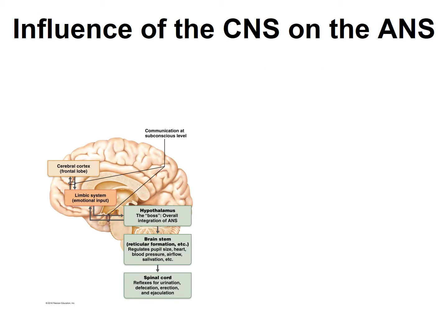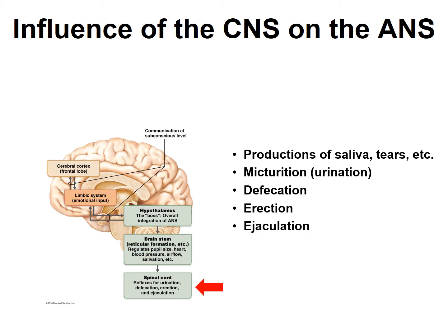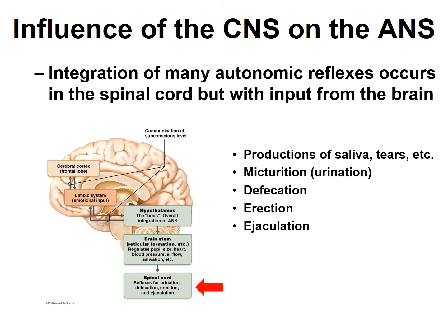The integration centers for autonomic nervous system reflexes are found in the brain and the spinal cord. The production of saliva and tears are autonomic nervous system reflexes, and those reflex centers are found in the brain stem. Autonomic nervous system reflexes below the neck — such as the micturition reflex (urination), defecation reflex, erection, and ejaculation — have their reflex centers in the spinal cord. Even so, those spinal cord centers receive influence and input from the brain, the brain stem, the hypothalamus, and the cerebral cortex.